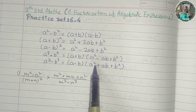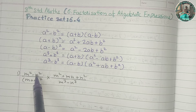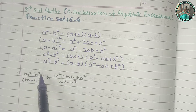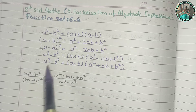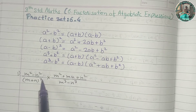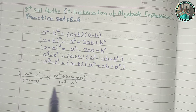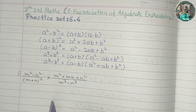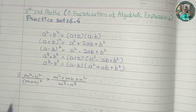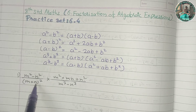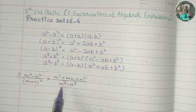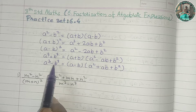Practice set 6.4. The first question uses the a² − b² formula. We have m² − n² upon (m + n)², into (m² + mn + n²) upon (m³ − n³). We apply the m² − n² formula and the (m + n)² formula.